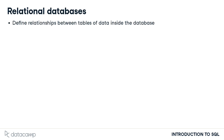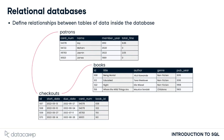A relational database defines relationships between tables of data inside the database. For example, each of our library patrons might be associated with several checkouts. Through these relationships, we can draw conclusions about data housed in separate tables in the same database, and answer questions such as: which books did James check out during 2022? Or, which books are checked out most often?